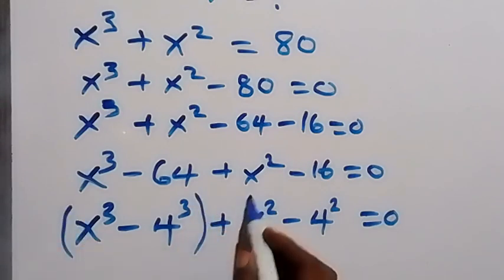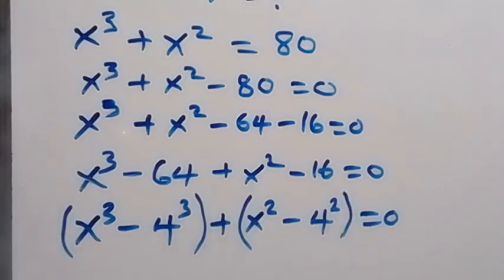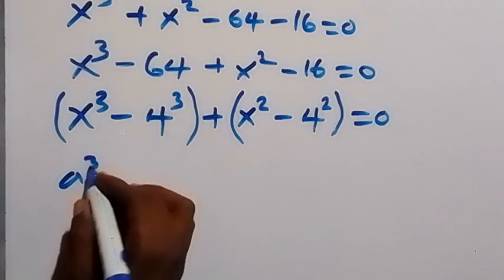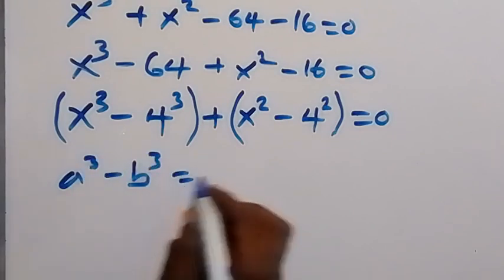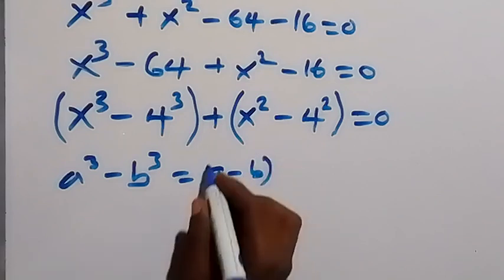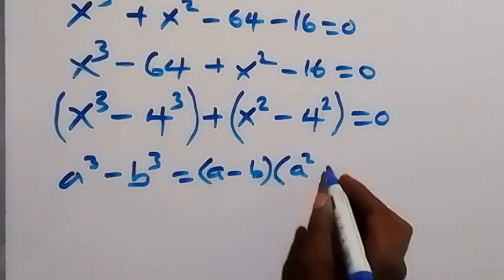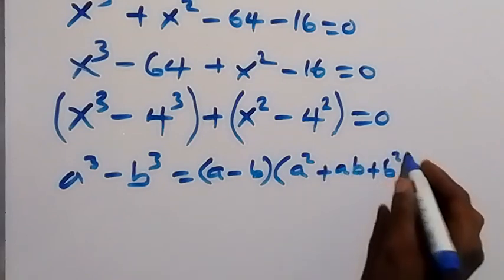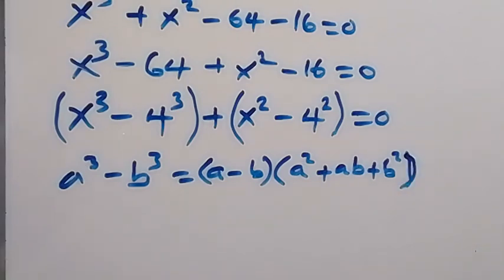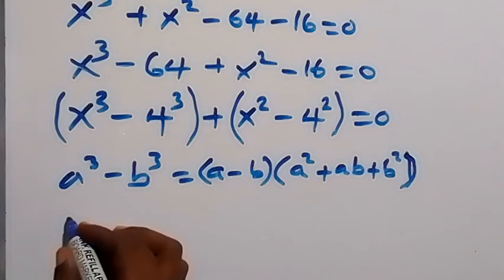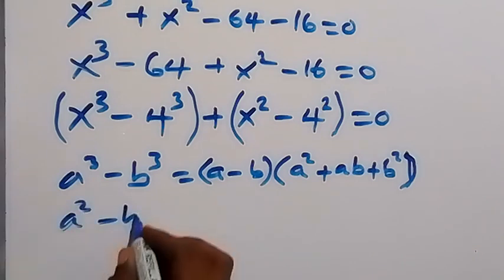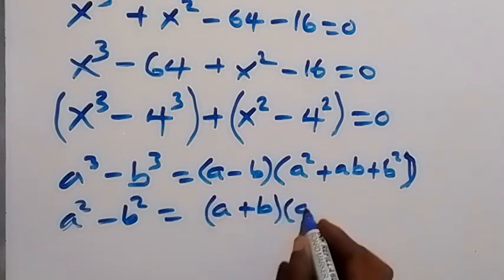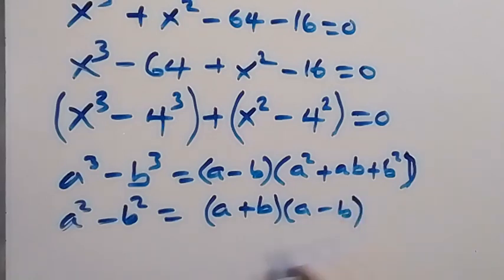We can separate and group these terms. For the difference of two cubes we use the identity: a³ − b³ = (a − b)(a² + ab + b²). We also have the difference of two squares: a² − b² = (a + b)(a − b).